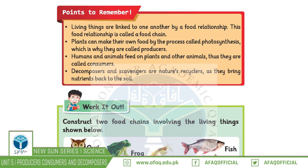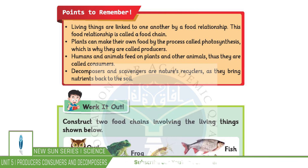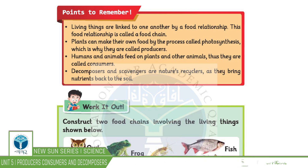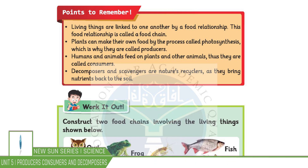Different animals have different diets, and there is a relationship between producers and consumers. Plants can make their own food, so they are producers.